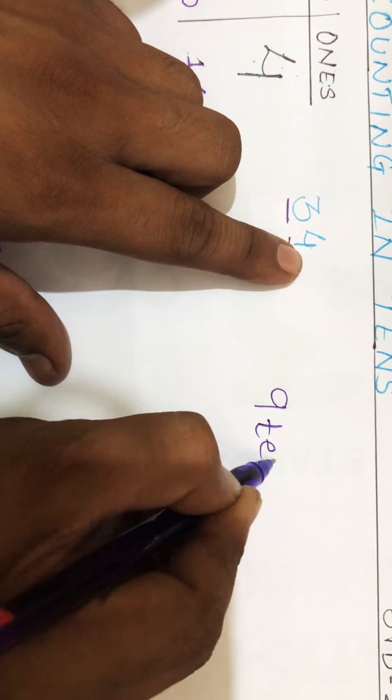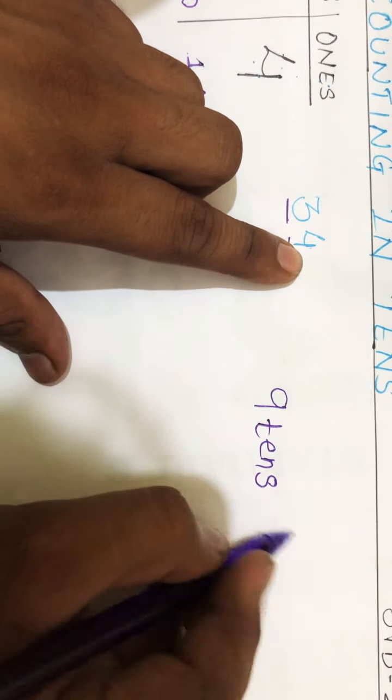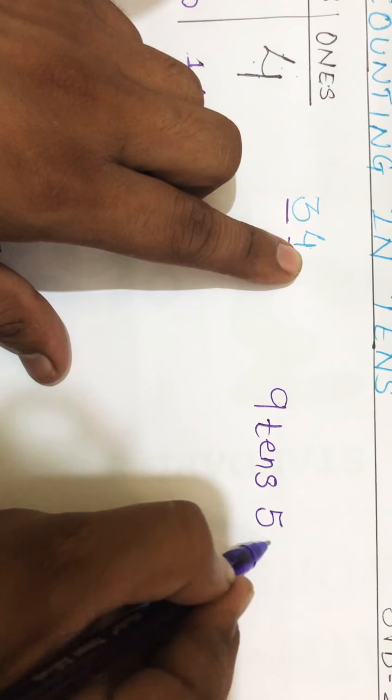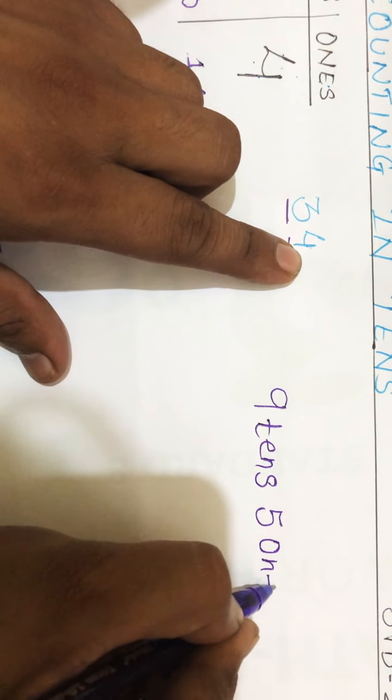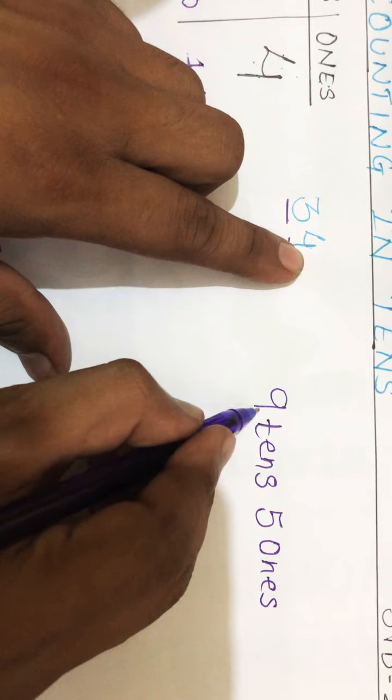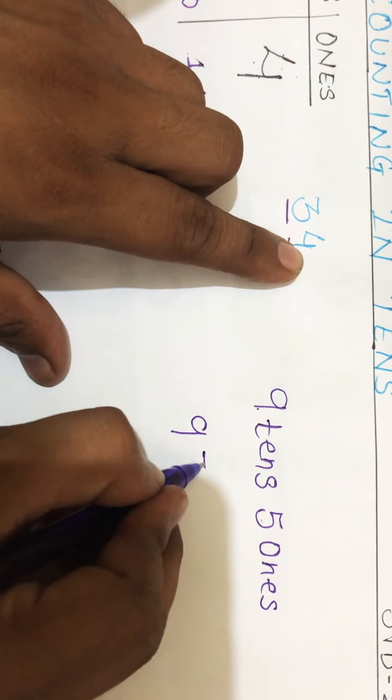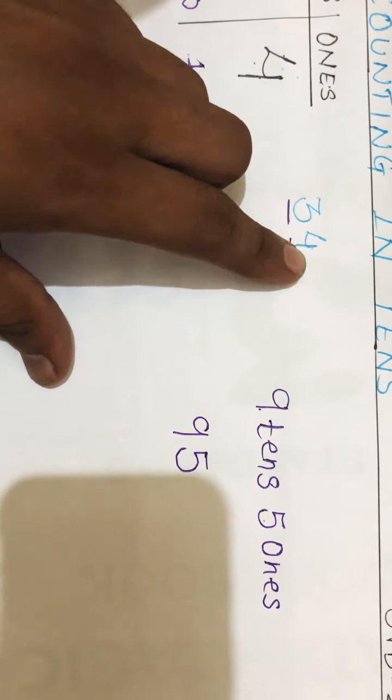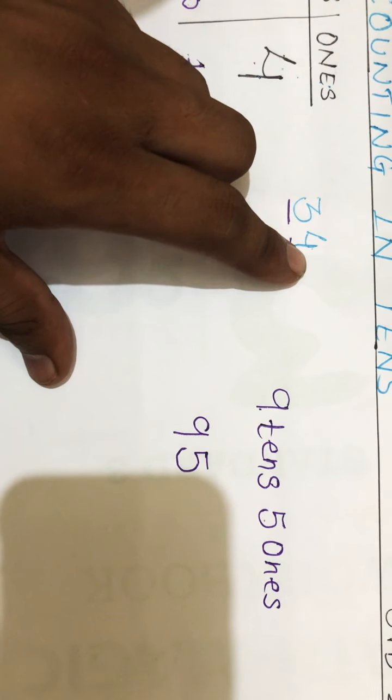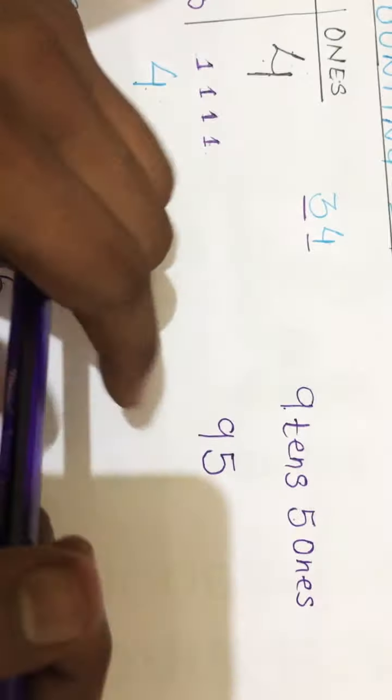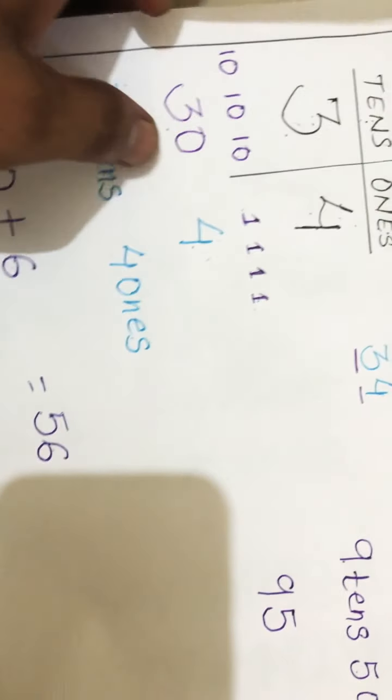Nine tens and five ones. So at tens place we can write nine, and what we will write at ones place? Five. So the number is 95. Now see, on the basis of this we will do the exercise which is given on page number 40.